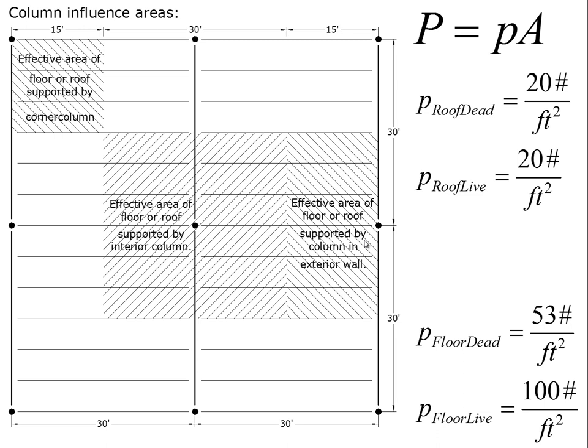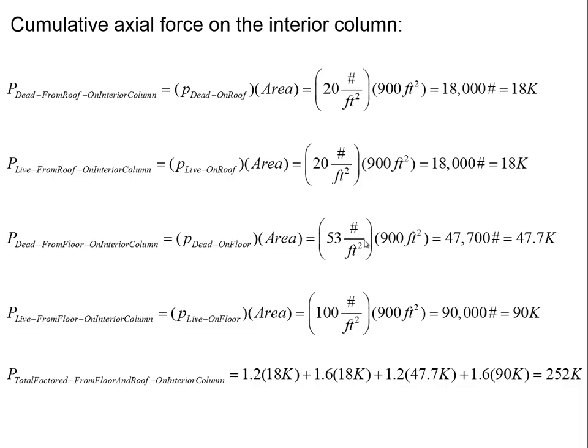We're keeping the same load case throughout: the roof area distributed dead load is 20 pounds per square foot, the roof area distributed live load is 20 pounds per square foot, the dead load on the floor is 53 pounds per square foot, and the live load on the floor is 100 pounds per square foot.